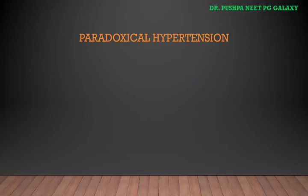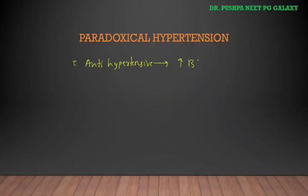Next is paradoxical hypertension, which means that on starting treatment with antihypertensive drugs, there is a rise in blood pressure instead of a fall. This will happen if we prescribe ACE inhibitors in cases of renal artery stenosis, or if we prescribe beta blockers to patients with pheochromocytoma.